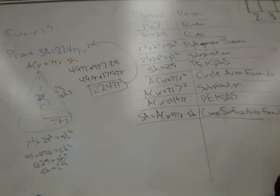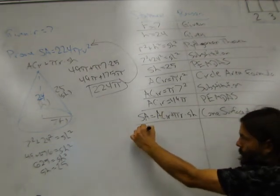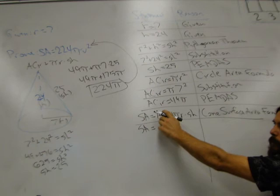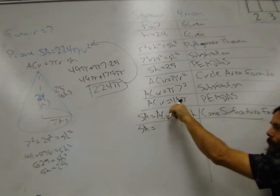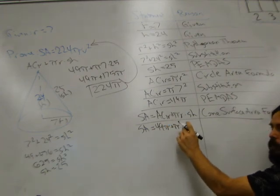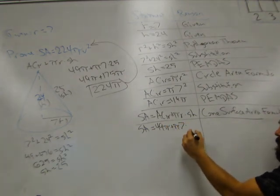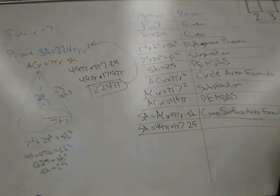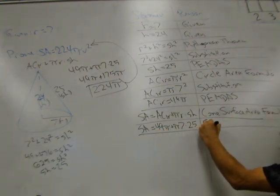Like we said before, everybody makes mistakes, but the key is to not make the same mistake twice. All right. So now we can plug in. Surface area is equal to, well, what was the area of the circle? You're not paying much attention. It's written right there. 49 pi plus pi times what was the radius? Seven. Seven times what was the slant height? 25. Okay. What did I do? Substitution.